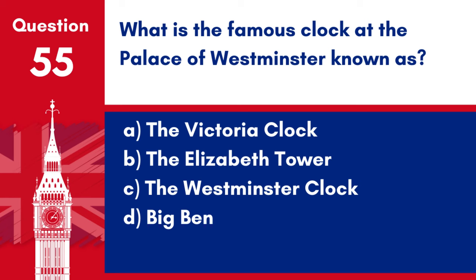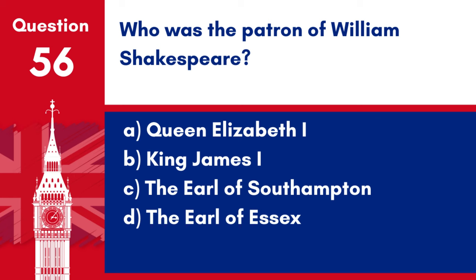Question 55. What is the famous clock at the Palace of Westminster known as? a. The Victoria Clock. b. The Elizabeth Tower. c. The Westminster Clock. d. Big Ben. Answer: d. Big Ben. Big Ben is the nickname for the Great Bell of the Clock at the north end of the Palace of Westminster in London. However, it is often extended to refer also to the clock and the clock tower.